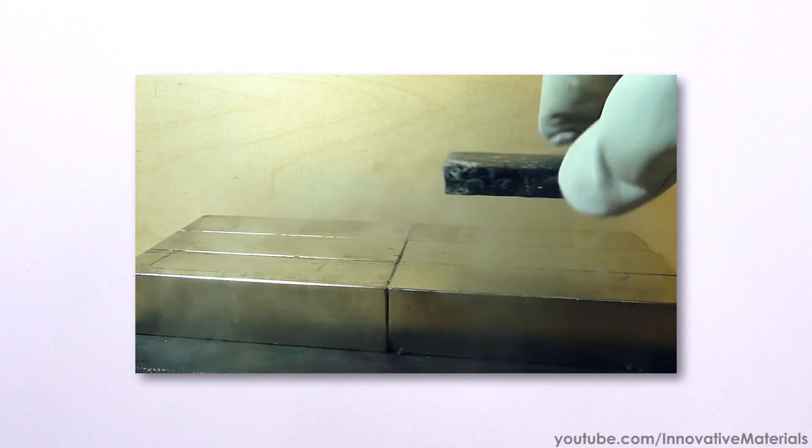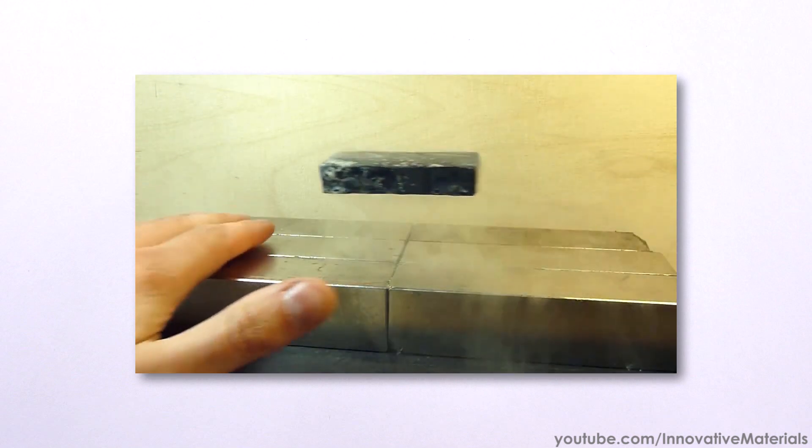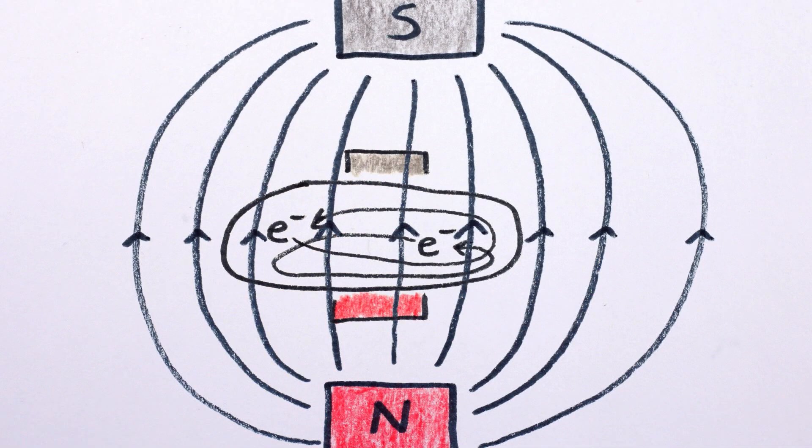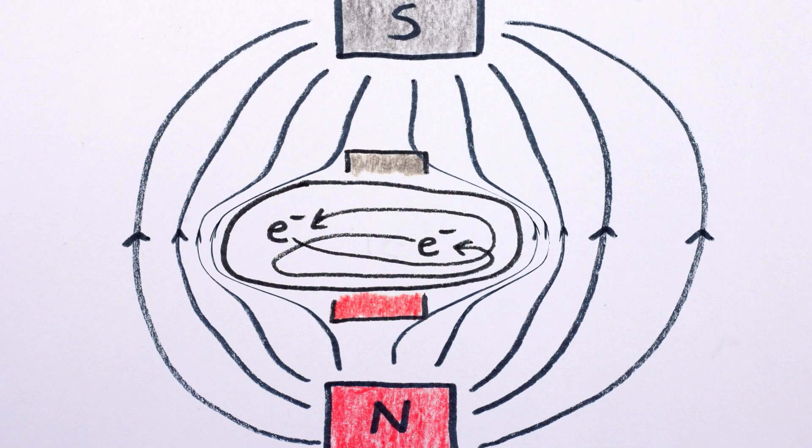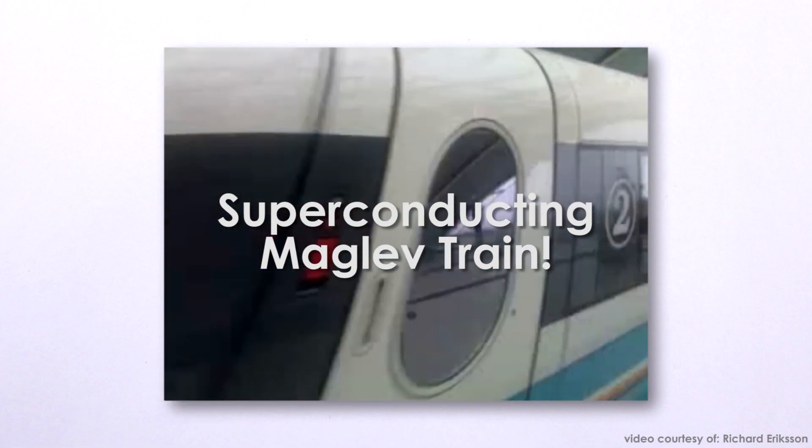You've probably also seen how superconductors can levitate in a magnetic field, which is a kind of perfect diamagnetism. Not only do the currents in a superconductor create opposing magnetic fields, they expel magnetic fields from the material entirely, but the root cause is very, very different, and that's a journey for another day.